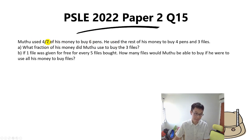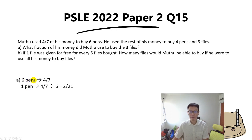Let's use the information: six pens cost 4/7 of his money. To find the cost of one pen, you simply take 4/7 divided by 6, and you get 2/21.